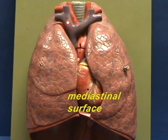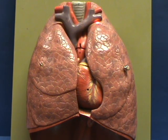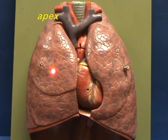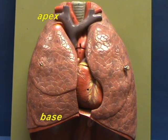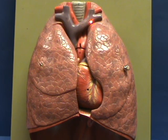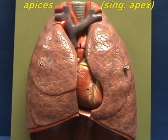The narrow upper part of each lung is referred to as the apex. The lungs go from this wide base and taper to a conical point, which extends into the upper thoracic inlet. These upper points are referred to as the apices — apex, singular; apices, plural.